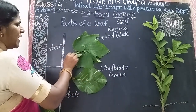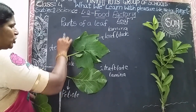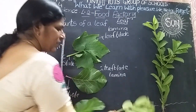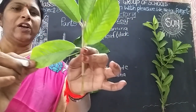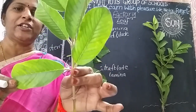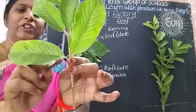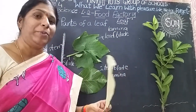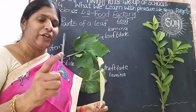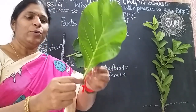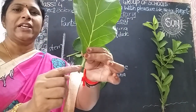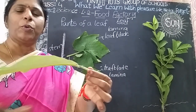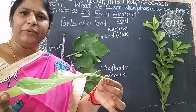All leaves are attached to the stem with a stalk. That stalk is called the petiole. This stalk gives support to the leaf.